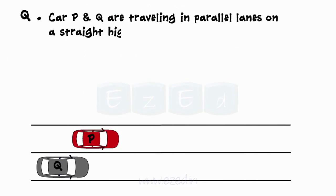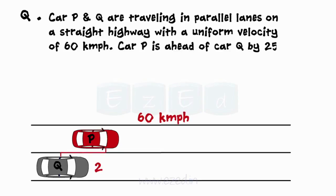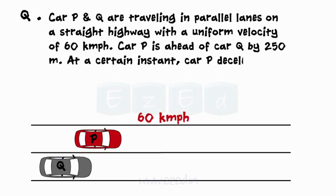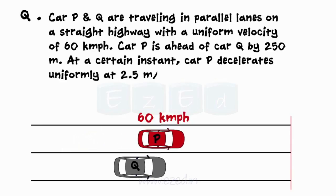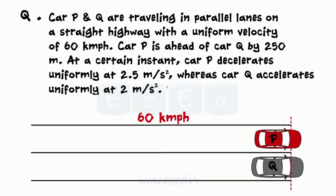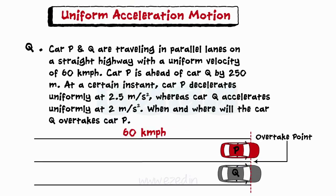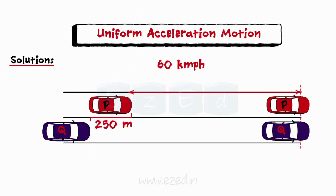Let us consider a problem to understand rectilinear motion better. Cars P and Q are travelling in parallel lanes on a straight highway with a uniform velocity of 60 km per hour. Car P is ahead of car Q by 250 meters. At a certain instant, car P decelerates uniformly at 2.5 meters per second squared. When and where will car Q overtake car P? Let car P travel x meters and so car Q travels x plus 250 meters as car Q will overtake car P.